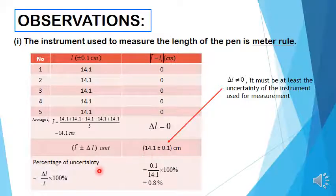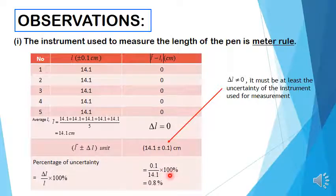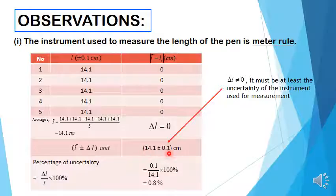Then calculate for the percentage of uncertainty using this formula: 0.1 divided by 14.1, multiplied by 100%. The result is 0.8%. The percentage of uncertainty is less than 15%, which means the result obtained for the length of the pen is acceptable.